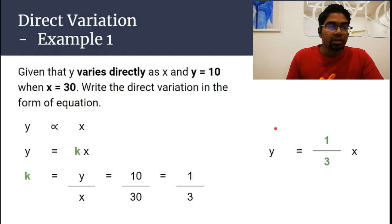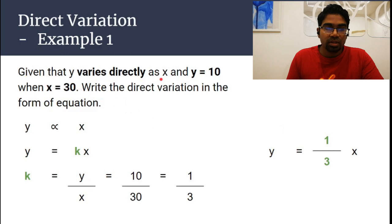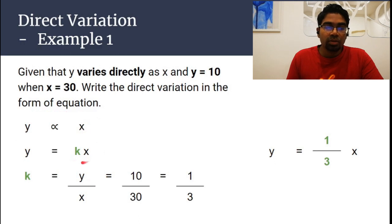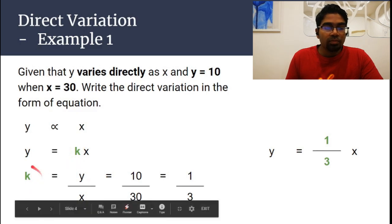Now let's look at an example. Given that y varies directly as x, and y is 10 when x is 30, write the direct variation in the form of an equation. From the variation statement, we move to equation form. When we go to equation form we need to add the proportionality constant, so y equals kx.